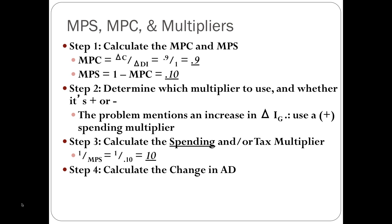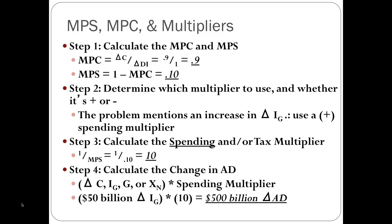Our last step is to calculate the change in aggregate demand. We multiply the initial change in gross private investment times the spending multiplier. From the problem, we have $50 billion in gross private investment times the multiplier of 10, giving a total of $500 billion increase in aggregate demand — or an increase in real GDP of $500 billion. Because of the multiplier, that initial $50 billion grew to a $500 billion increase in aggregate demand.